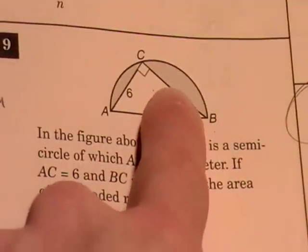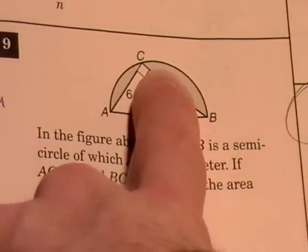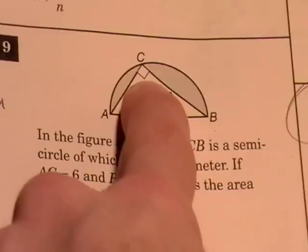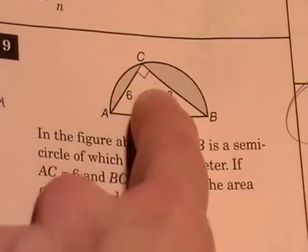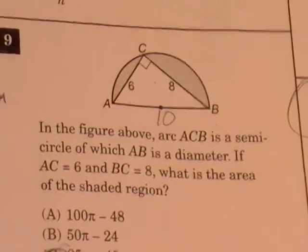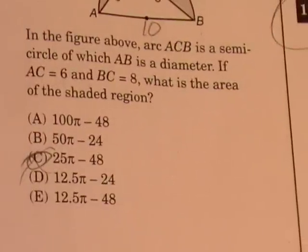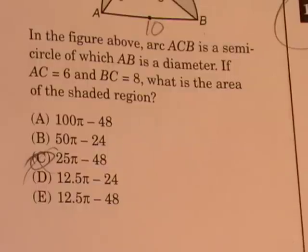The shaded region is the region that is not the triangle that's inside here. Those are our choices, A through E.